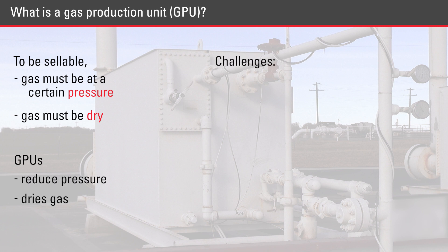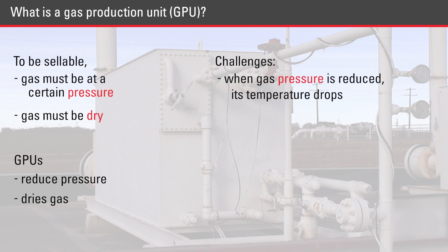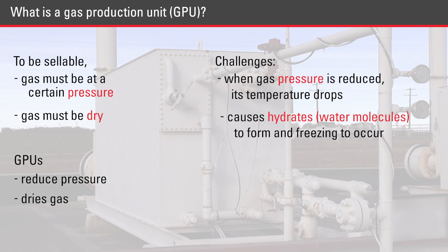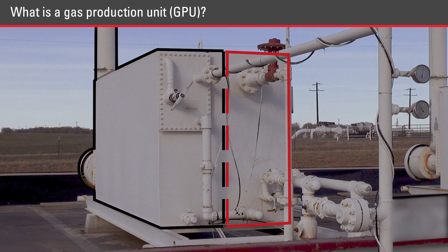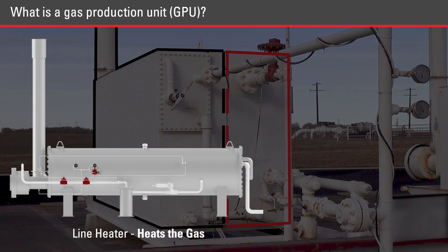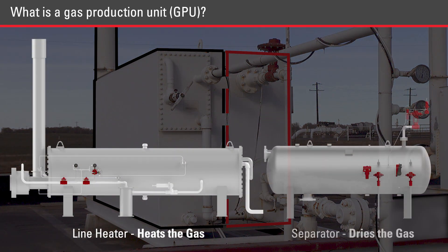The challenge with reducing pressure is that when the gas pressure is reduced, its temperature drops, which can cause hydrates to form and freezing to occur. This is where the GPU comes in. The line heater heats the gas, and then the separator dries the gas by knocking out the liquids.